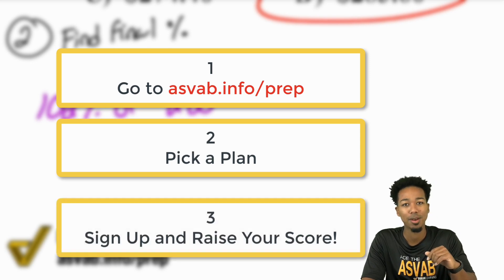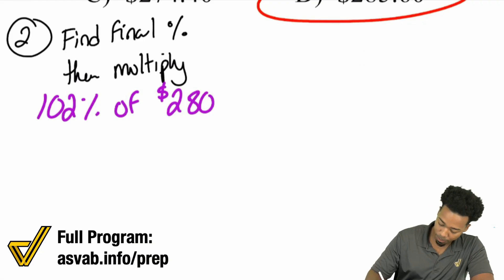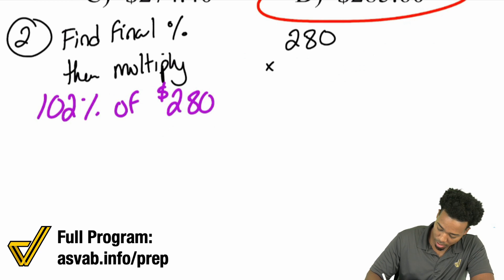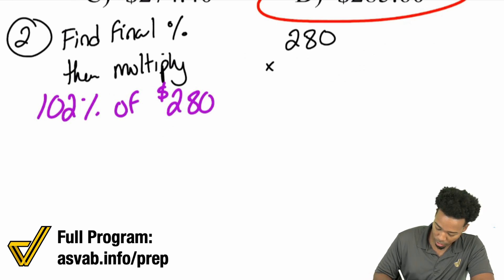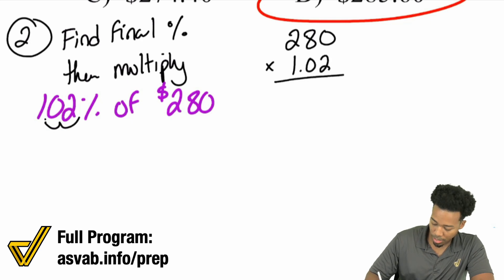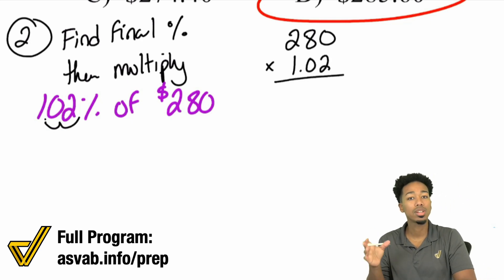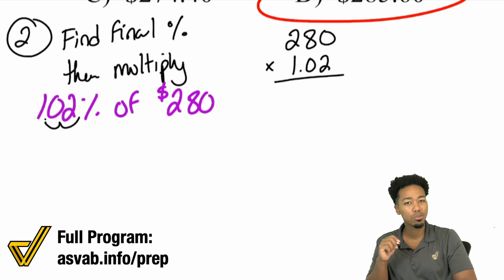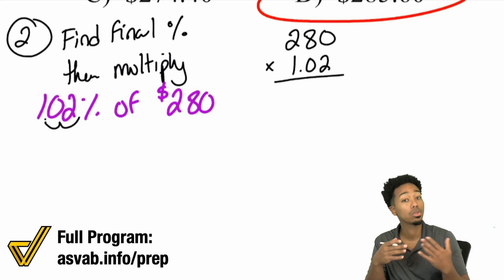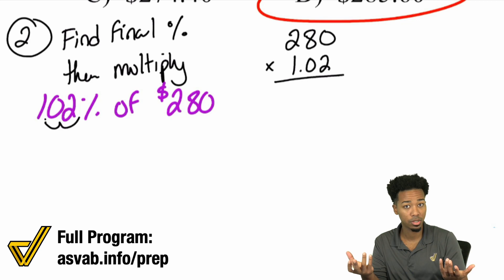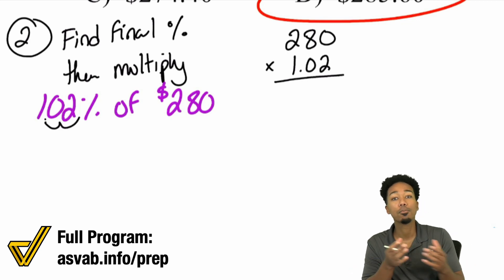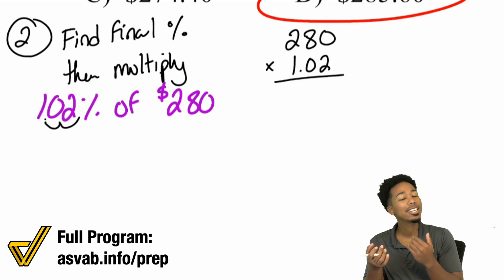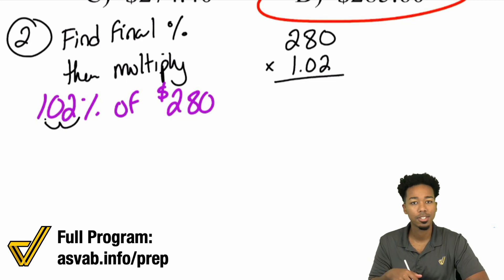We write 280 multiplied by 102%, which converts to the decimal 1.02. Notice we can do this in one step, though it involves a larger multiplication. It might take a little longer depending on how confident you are, but it's important to know both ways since convenience depends on the numbers.